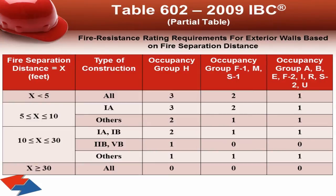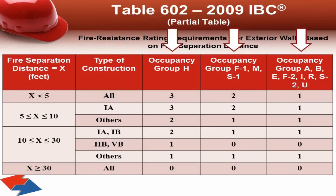We use the fire separation distance in Table 602 to determine if any of the exterior walls are required to be fire-resistant rated, due to the building wall's distance away from the closest interior lot line, to the center line of a street, alley, or public way, or to an imaginary line between two buildings on the same property. In addition to the fire separation distance, you can see in Table 602 that the fire-resistant rating of an exterior wall is also based on the type of construction and the occupancy group.